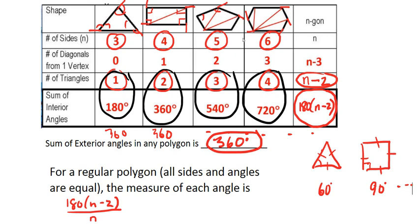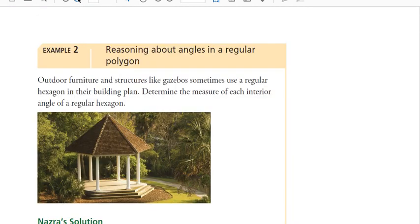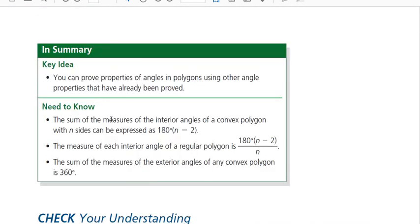And that continues on. If we just zip back to the text, I'll give you a chance to just finish that up real quick. And back to the text here for 2.4, if we go to the need to know there, we'll skip some of these examples. You can prove properties of angles and polygons using other properties, we've already seen that.